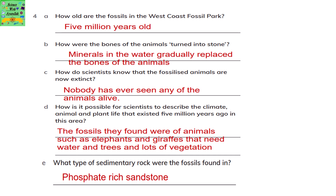How do scientists know that the fossilized animals are now extinct? They know because nobody has ever seen any of these animals alive. How is it possible for scientists to describe the climate, animal and plant life that existed 5 million years ago in this area? The fossils they found were of animals such as elephants and giraffes that need water, trees and lots of vegetation. What type of sedimentary rock were the fossils found in? Phosphate-rich sandstone.